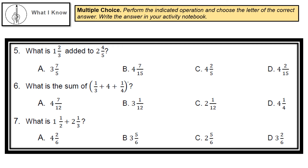Number 7: What is 1 and 1/2 plus 2 and 1/3? A. 4 and 2/6, B. 3 and 5/6, C. 2 and 5/6, or D. 3 and 2/6.